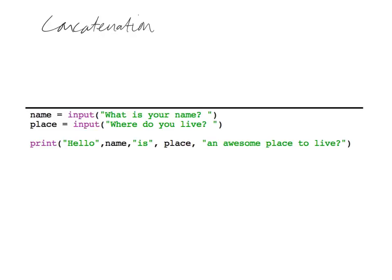Concatenation is basically joining two or more strings together — pretty straightforward. We've got here two variables, name and place, and we've asked the user to enter in some strings. We're literally just putting it all together in one string, adding the two variables which the user will type in as strings.